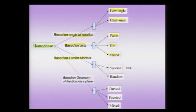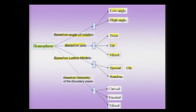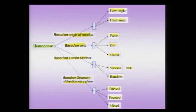You can classify homophase boundaries based on the models used to describe them. For instance, you can have CSL models — known as coincident site lattice models — describing homophase boundaries, and in this context we can call a homophase boundary special or random. If you have a low coincident site lattice number, which is typically given as symbol sigma, then you call them a special boundary; otherwise you call them a random boundary. Special boundaries typically have a low surface energy or interface energy value.